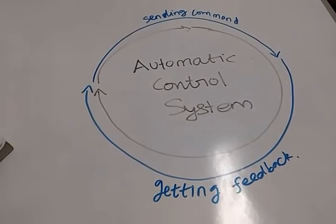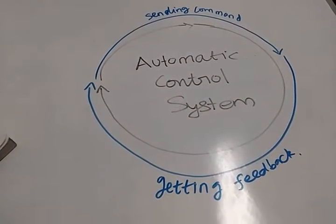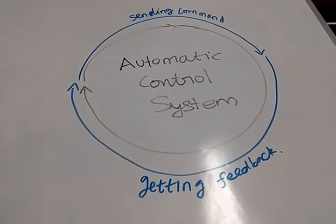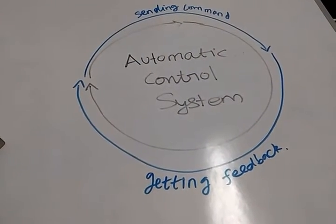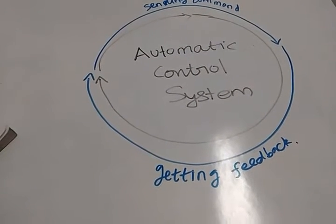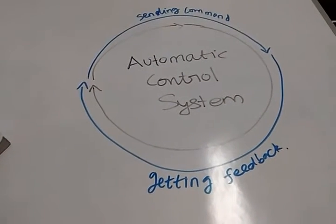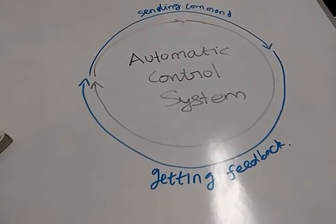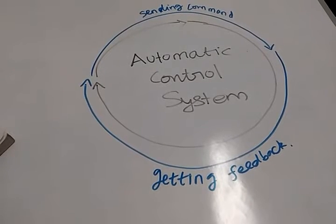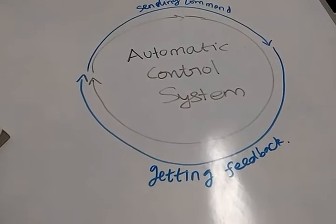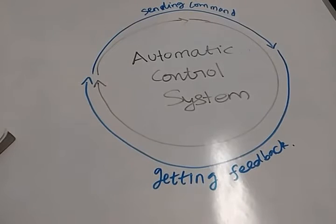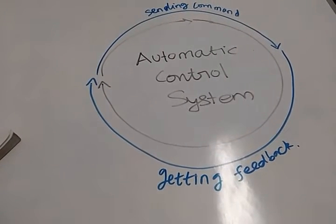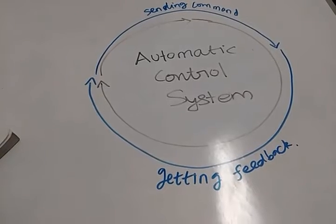The input is given by the operator and the output is taken from the surroundings where this system has been implemented. Here the output value is compared with the input value to get accurate results. It is simply to improve the accuracy of the system.